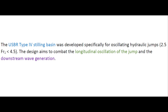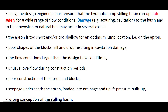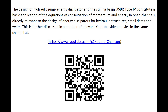The USBR Type 4 stilling basin was developed specifically for oscillating hydraulic jumps, with the design aimed at combating the longitudinal oscillation of the jump and the downstream wave generation. The designer must ensure that the stilling basin can operate safely for a wide range of flow conditions, as damage to the basin and the downstream natural channel may occur across a wide range of scenarios. The design of the hydraulic jump stilling basin and the Type 4 in particular constitute a basic application of conservation of momentum and energy in open channels, directly relevant to the design of energy dissipators for hydraulic structures, small dams, and weirs.